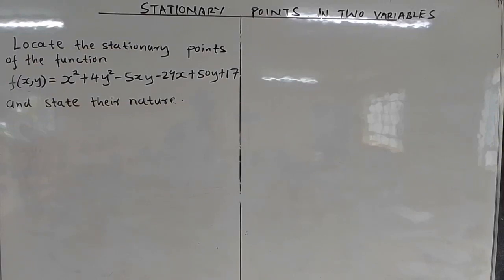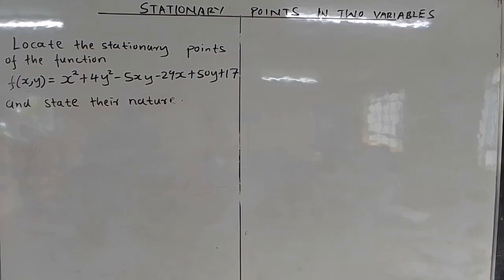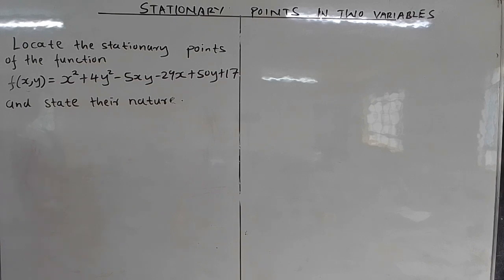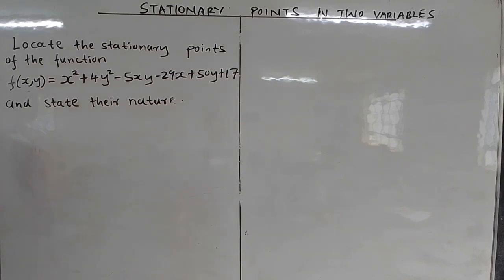In this next case, you'll be taught to locate the stationary points of the function f(x,y) = x² + 4y² - 5xy - 29x + 50y + 17, and determine their nature.